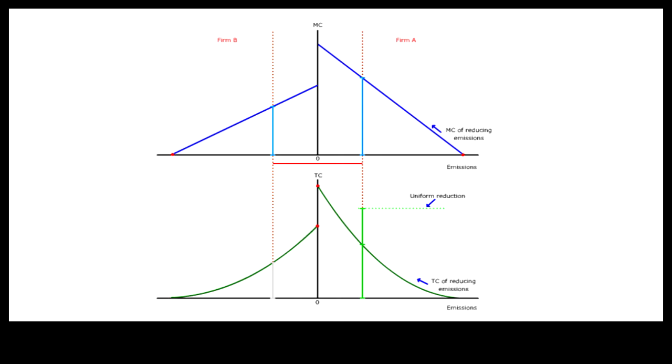If the same level of pollution reduction is redistributed so that the marginal cost for the last unit reduced at each firm is equal, would total cost be reduced? Such redistribution of pollution reduction involves moving more pollution reduction from higher cost Firm A to the lower cost Firm B until the marginal cost at each firm is equal.